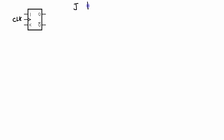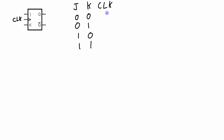Here's my clock input. This is a rising edge triggered JK flip-flop. We have four different possible combinations for the J and the K values that could be input into the flip-flop: J and K could both be 0, we could have J0 and K1, we could have J1 and K0, or we could have both J and K equal to 1. These values of J and K only matter on the rising edge of the clock.